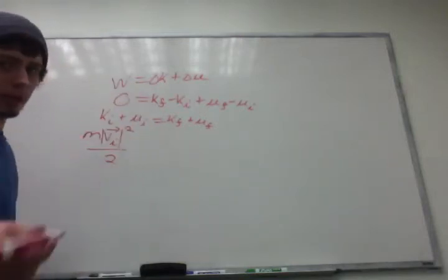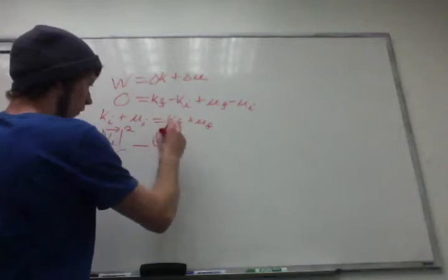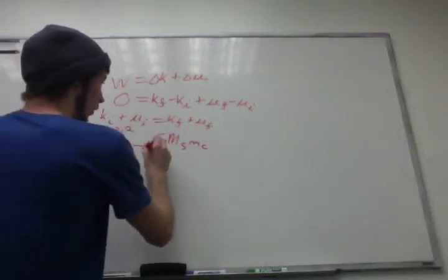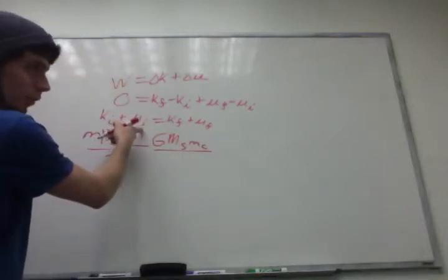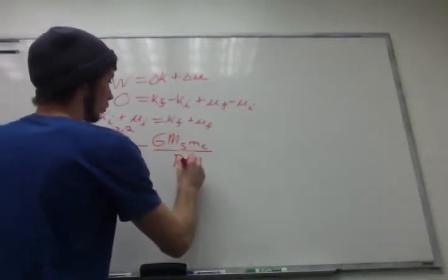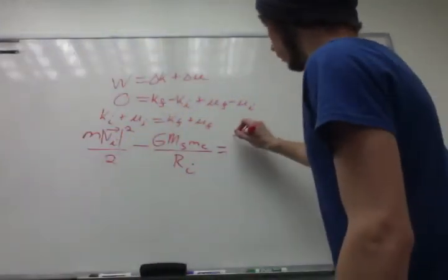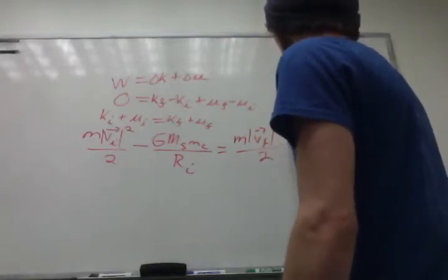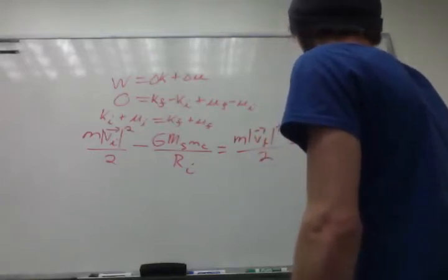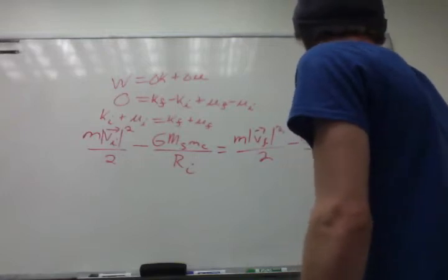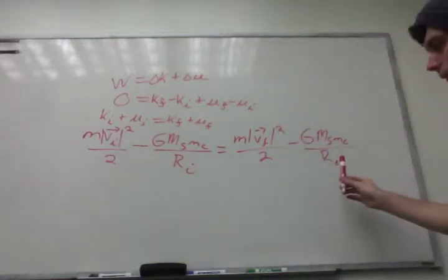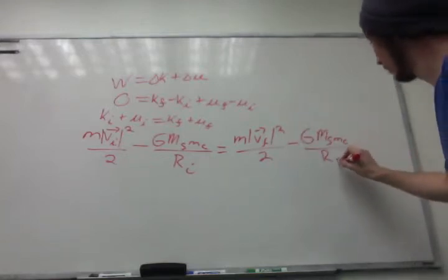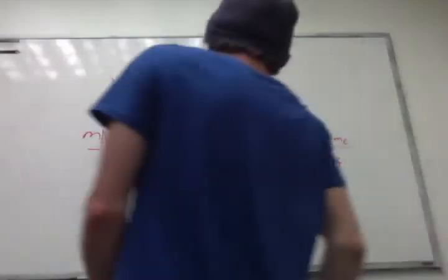So the way that formula goes, it's minus gravitational constant, big mass in the sun, mass in the comet, all that over the initial radius, because we're referring to that initial point. And that is going to equal basically something very similar, except defined at the final radius and final velocity. And that should be the mass of the comet, which is good, because all of these comet masses cancel out.